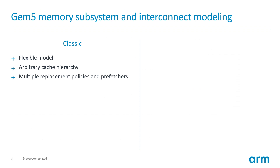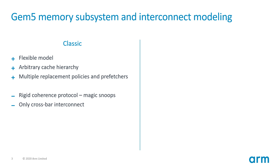As you may know, gem5 provides two different approaches for this. The first one is what I call the classic memory subsystem, which provides very flexible models and configurability. For instance, you can model a system with an arbitrary cache hierarchy by just changing some Python configuration files. However, the classic subsystem has some drawbacks. The only type of interconnect available is a hierarchical crossbar, and cache coherency is simplified and implemented using untimed loops. This may not lead to many inaccuracies when modeling a small system, but it is not very realistic for large SoCs.